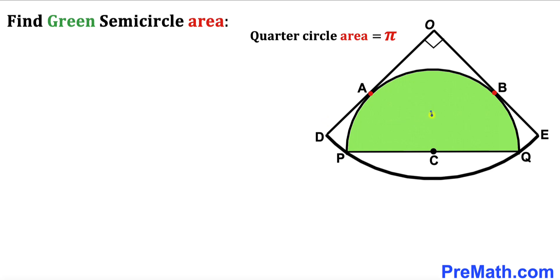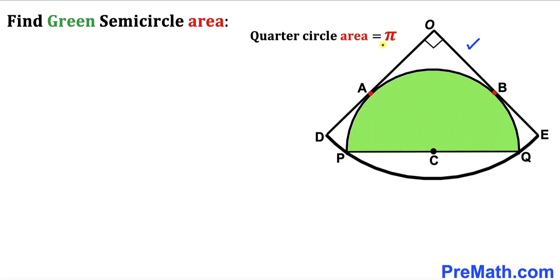In this video we have a green semicircle fully inscribed in a quarter circle, such that C is the center of the green semicircle and O is the center of the quarter circle. A and B are the points of tangency. The area of this quarter circle is π square units, and our task is to calculate the area of the green shaded semicircle.